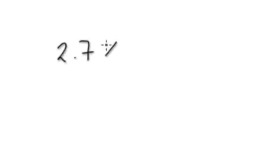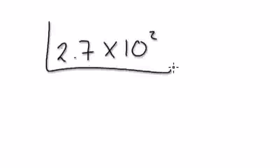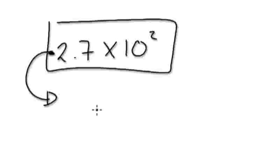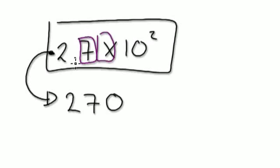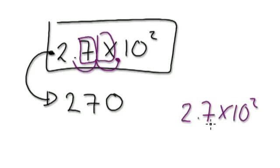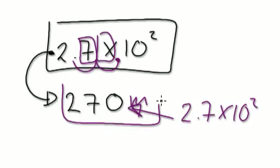So what does 2.7 times 10 to the power of 2 mean? Learn to jump straight from standard form to the decimal. This will be 270 — because we move the decimal point 1, 2 places to the right. So the Titanic is 270 meters. At the moment 270 is simpler than this standard form, but later on as things get bigger, standard form is much better.